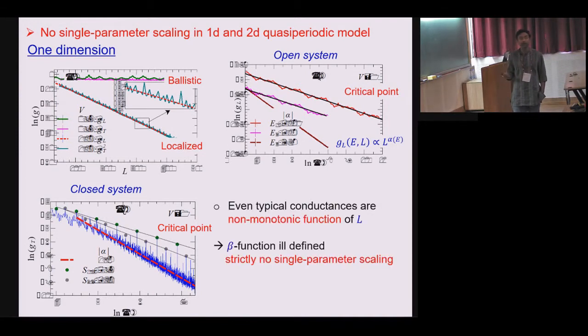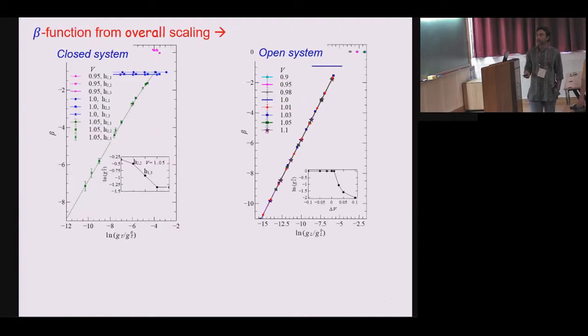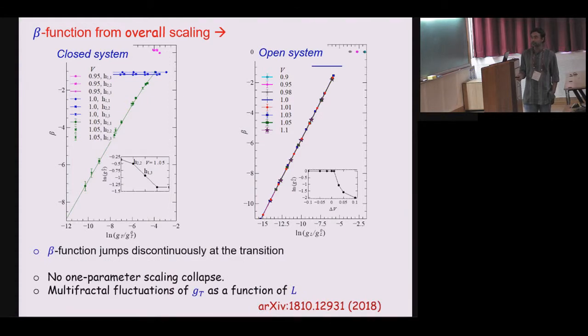Even the typical or average conductance has a non monotonic function of length. So this at once violates single parameter scaling because you cannot define a beta function. Strictly there is no single parameter scaling. However you can look at the overall behavior and what you find the way this transition happens is actually by discontinuous jump of this beta function. So it is not a continuous function, again it violates the single parameter scaling assumption.